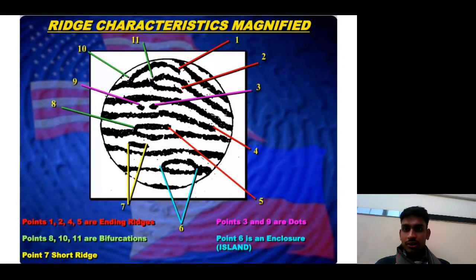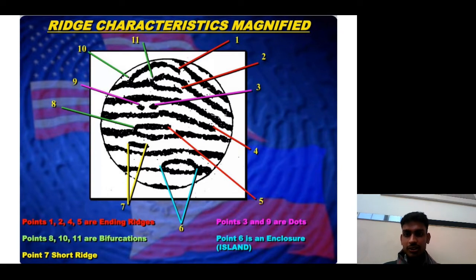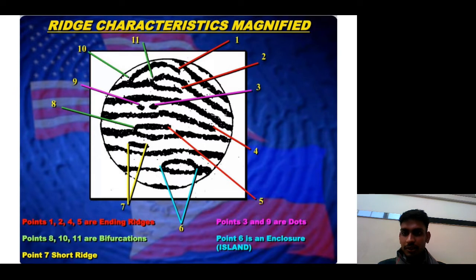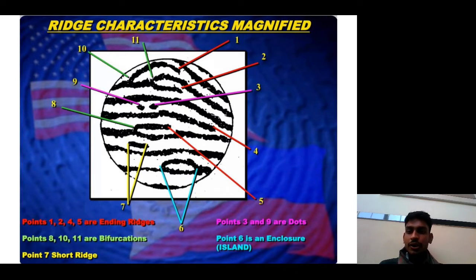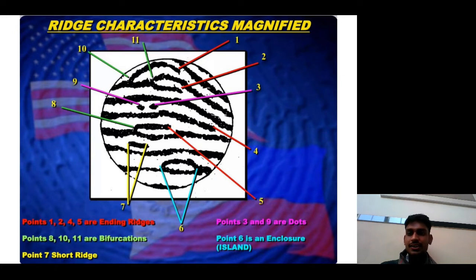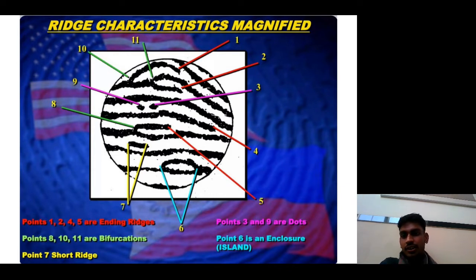In this magnified fingerprint image, points 1, 2, 4, and 5 are ending ridges — where a ridge ends suddenly. Points 8, 10, and 11 are bifurcations. Points 3 and 9 are dots. Point 7 is a short ridge, and point 6 is an enclosure or island. This magnified image allows us to see the different ridge characteristics clearly.